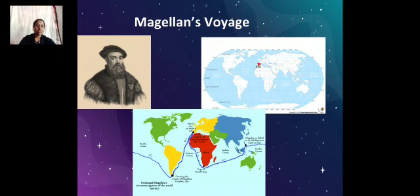Who proved that the earth was round? Ferdinand Magellan. This is the picture of Magellan. Look at this map. This is the voyage route of Magellan.